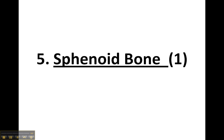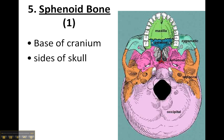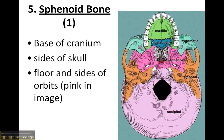Let's view information about the sphenoid bone. Make sure that you make note again that it is a single bone that makes up the cranium. Keep your bone count going along. There are two more: the sphenoid and the ethmoid. The sphenoid bone is present at the base of the cranium and the sides of the skull, as well as the floor and sides of the orbits. You can see it in this image as a very bright fuchsia pink color.